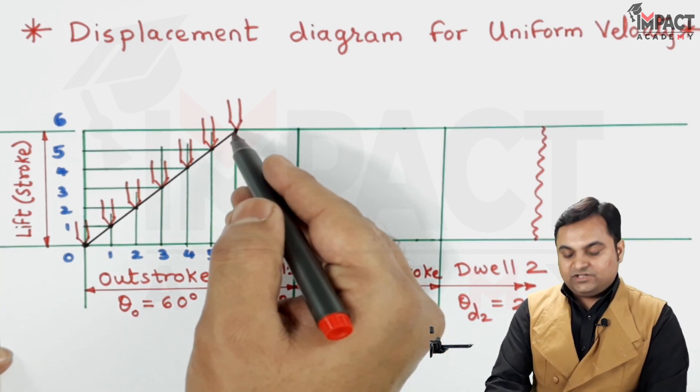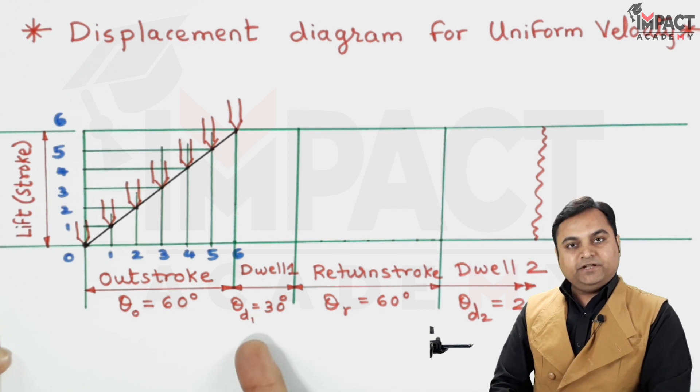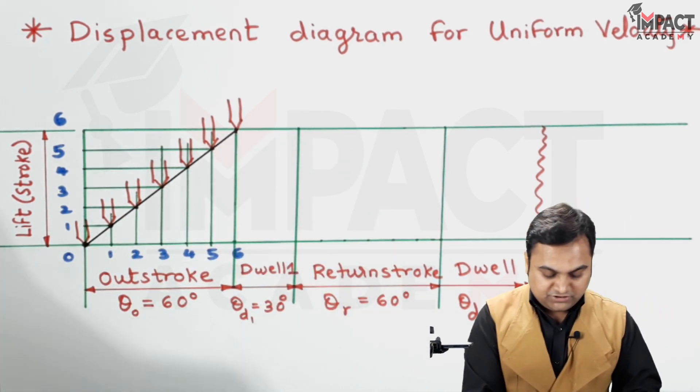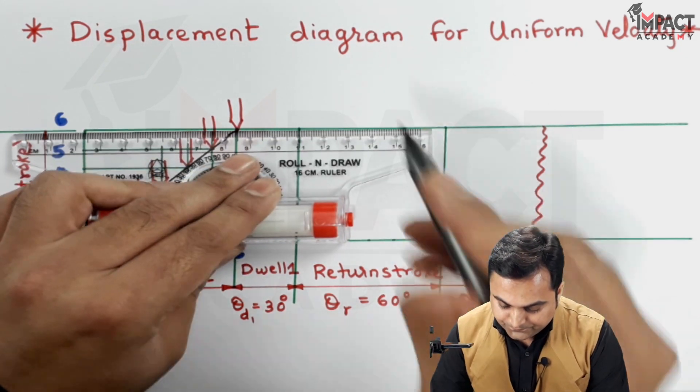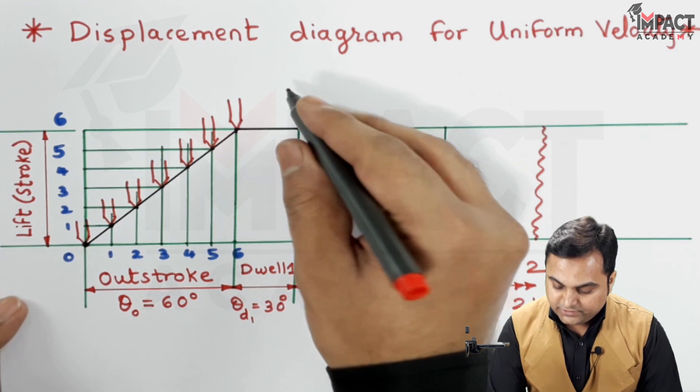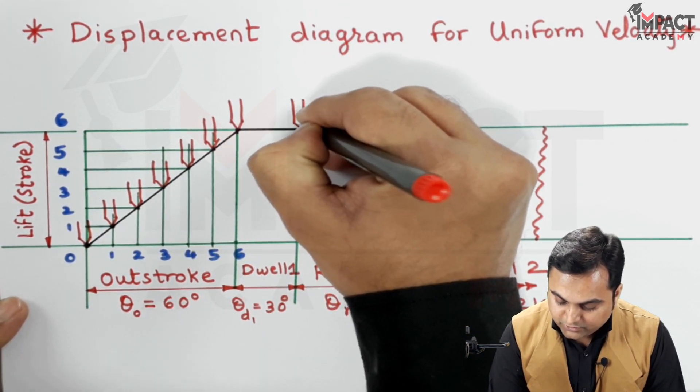Now once it has reached the top position during the dwell period, that is for the further 30 degrees of cam rotation, follower will remain at the same height. So I am just drawing a dark line which indicates the dwell, that is the follower is at the same height for the next 30 degrees of cam rotation.